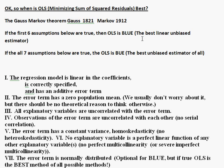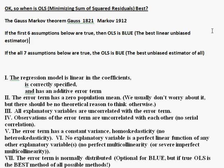Since we know what these terms mean: 'best' means minimum variance — most accurate; 'linear' we won't go into again; and 'unbiased' means on average correct — not on average too high, not on average too low for the estimates of slopes. So OLS is the best linear unbiased way to estimate slopes, meaning it uses the data you have in the most efficient way to get the most precise, most accurate estimate of what the slopes are. If the first six assumptions are true, then OLS is the best linear estimator.